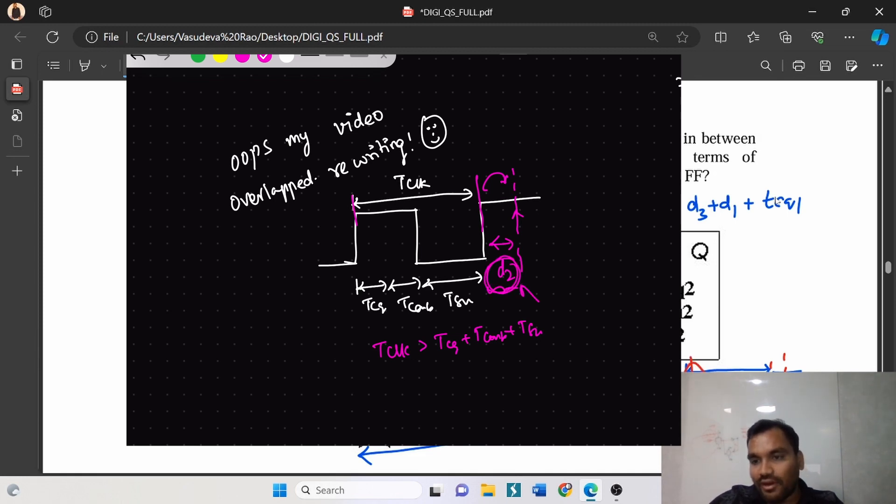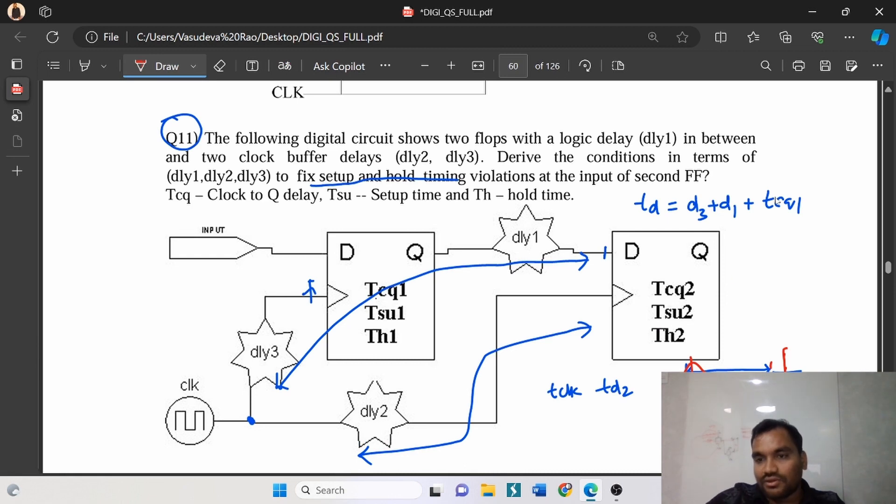So for my clock period I am getting little more adjustment. So at this edge I will start my analysis. But at the second flop, my clock edge is reaching at this point because of the delay in the clock path.